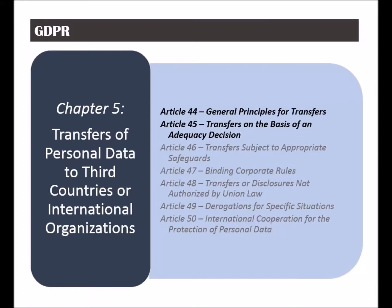The fifth chapter of the GDPR is called Transfers of Personal Data to Third Countries or International Organizations, and it has seven articles. The first two articles, numbers 44 and 45 overall, are called General Principles for Transfers and Transfers on the Basis of an Adequacy Decision.